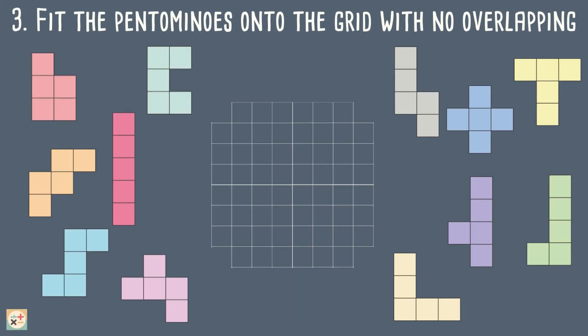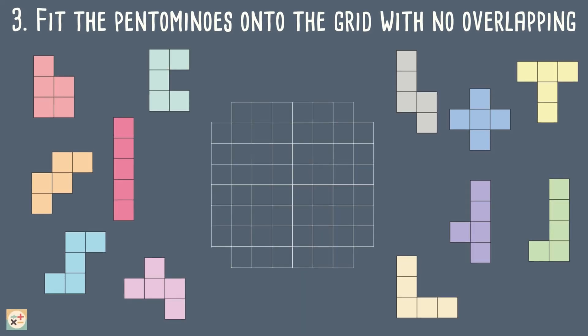Puzzle number three is another 8x8 grid, this time with the four corner squares missing.